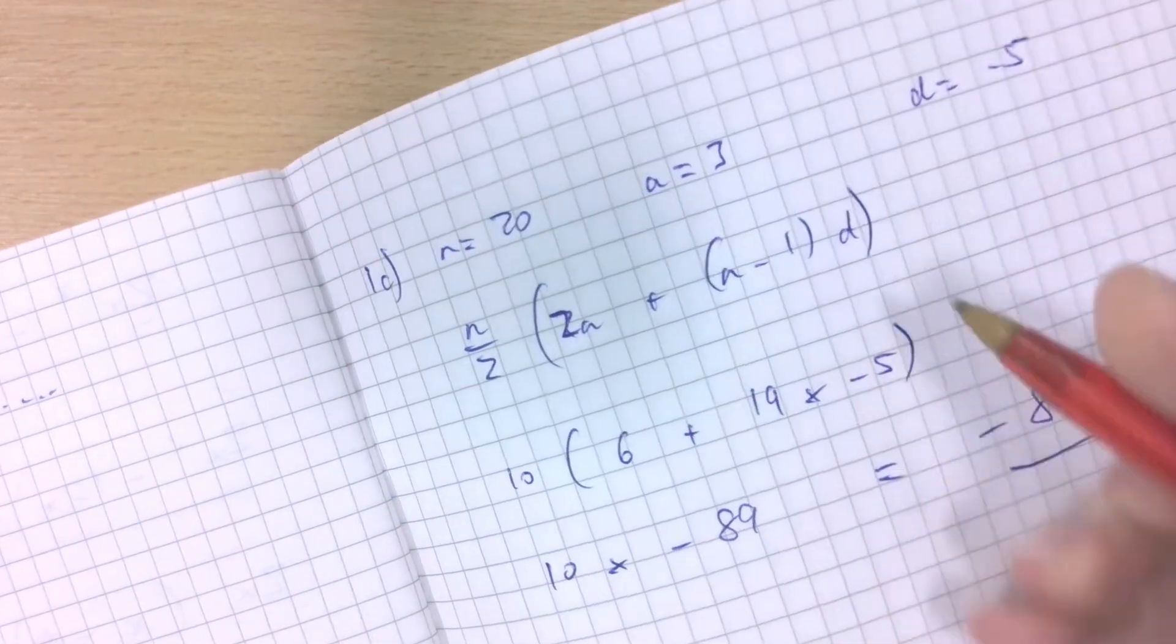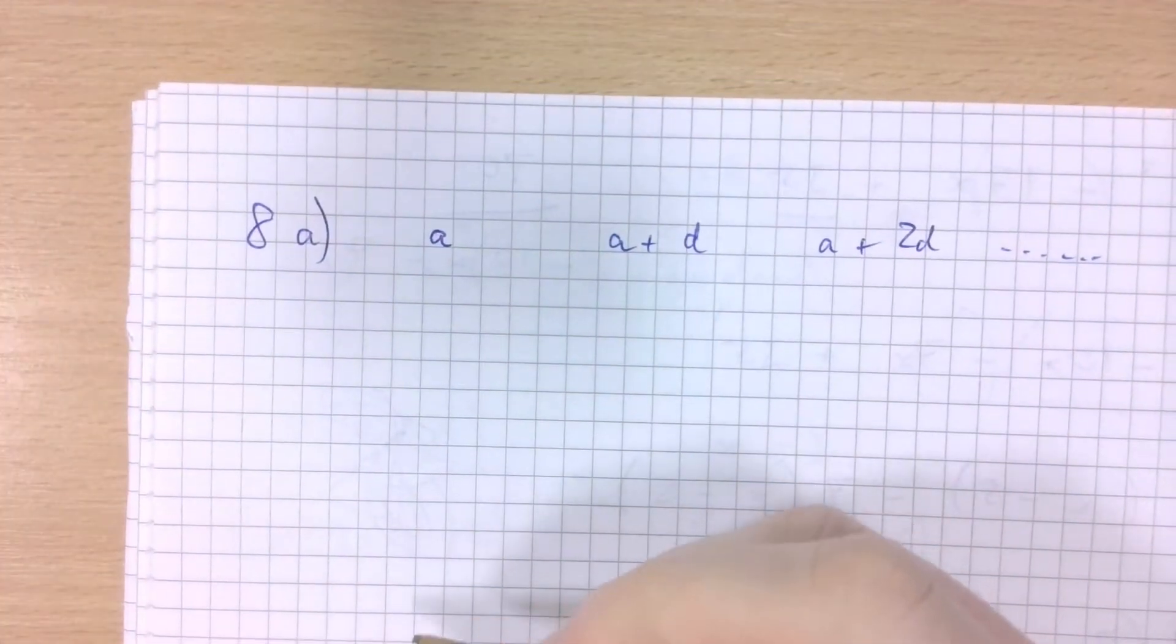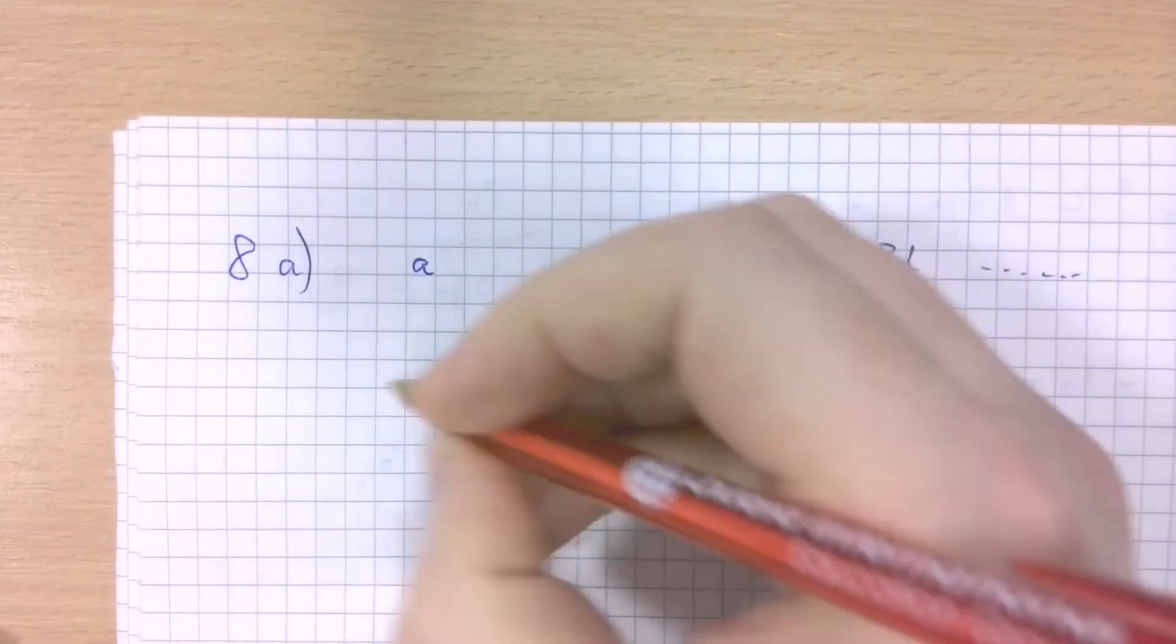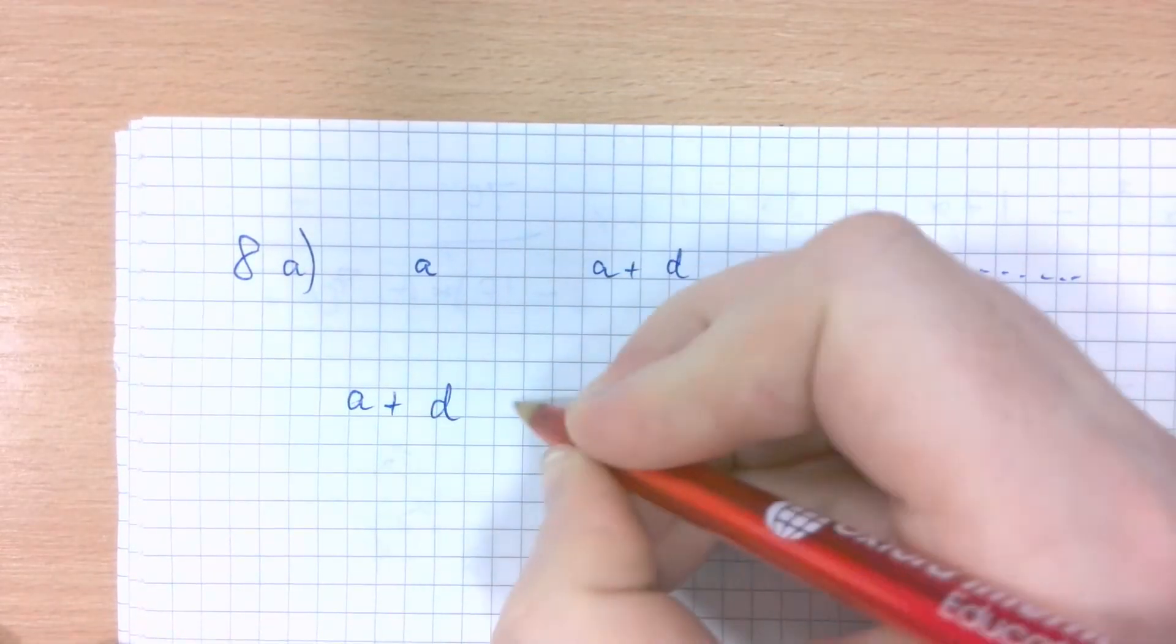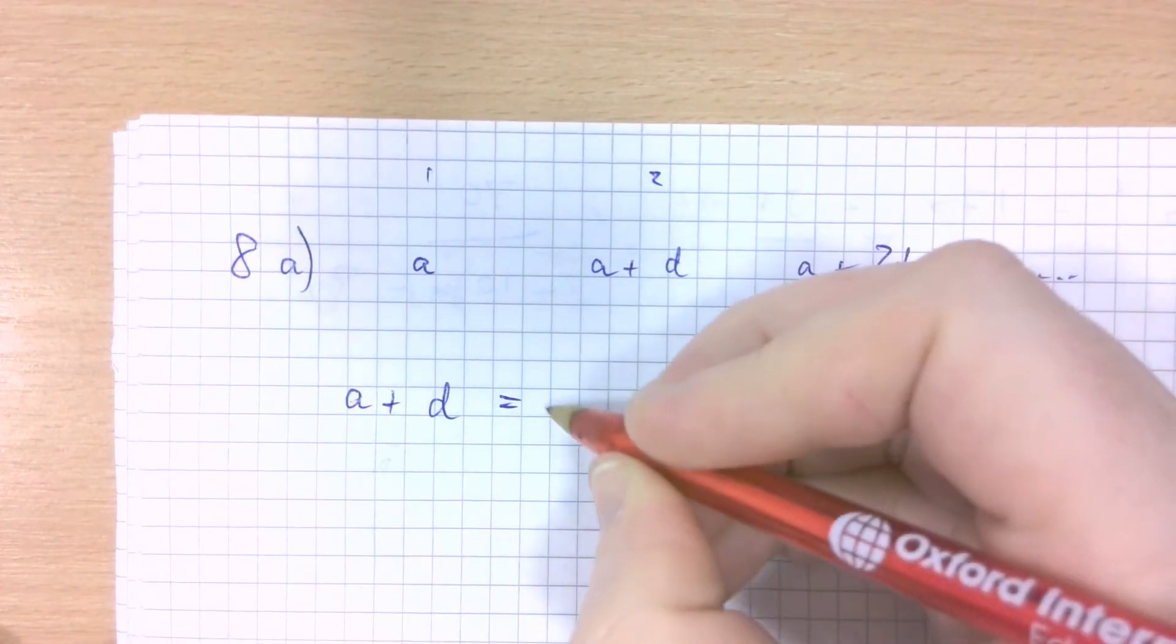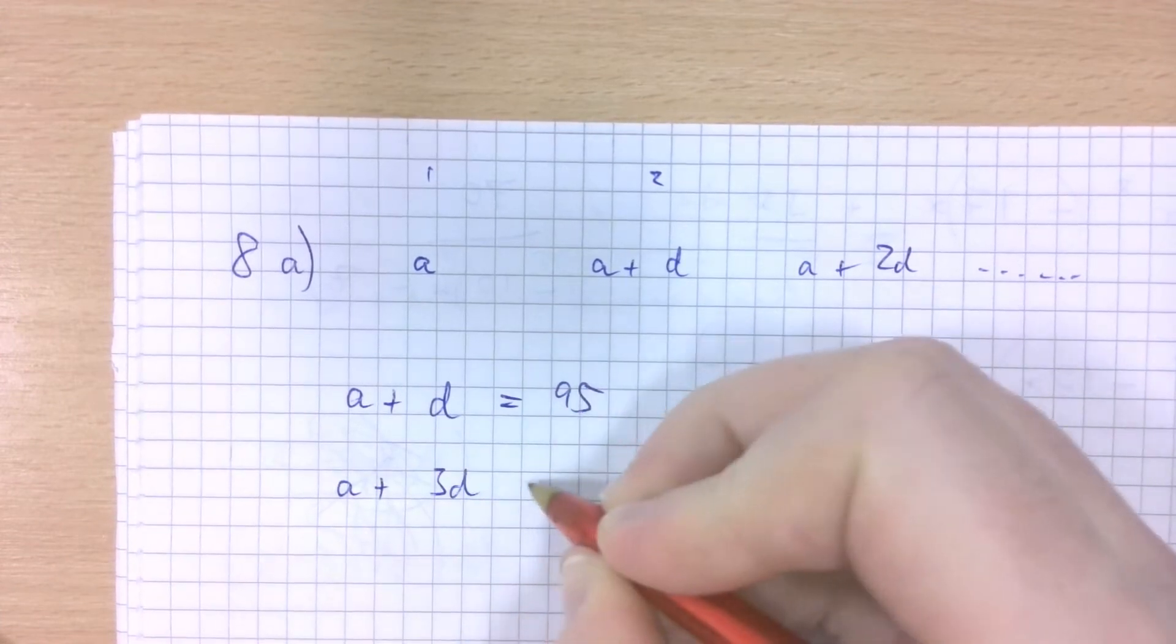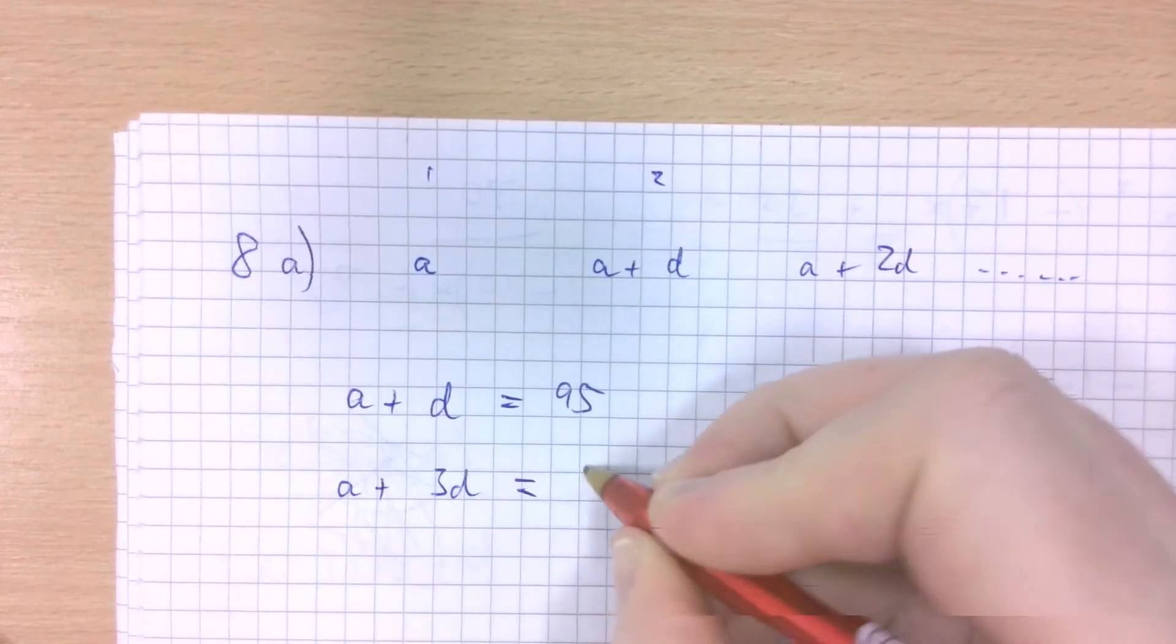The number of differences is always n minus 1. That's where n minus 1 comes from in this little formula that we use when we're summing series. So if the second term of an arithmetic series is 95, that means a plus d, the second term, is 95. And then the fourth term would be a plus 3d, and we're told that that's 91.